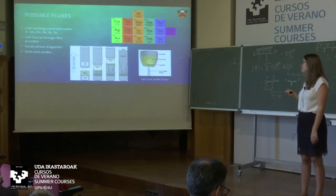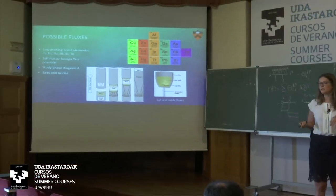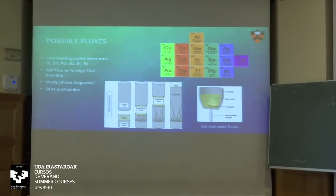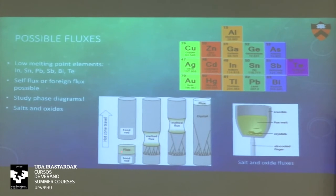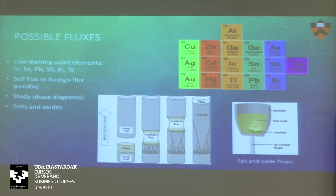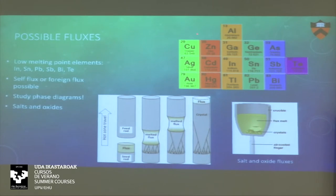You can also use salt fluxes to grow crystals, usually done for oxides — optical crystals are often grown this way. There are methods where you have a feed rod with a little flux, heat a zone, and grow gigantic crystals of transparent oxides, which is often used for optical applications — very industry-focused. These are the elements on the periodic table you can use as metal fluxes. They all have relatively low melting temperatures so you can use them as a solvent to grow crystals.